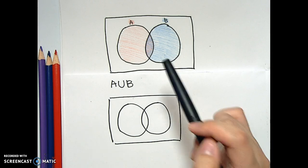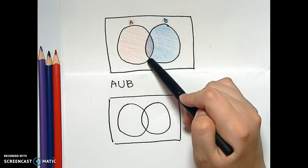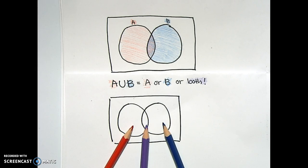So union is A, or B, or both. So it means that the union includes red, blue, or purple.